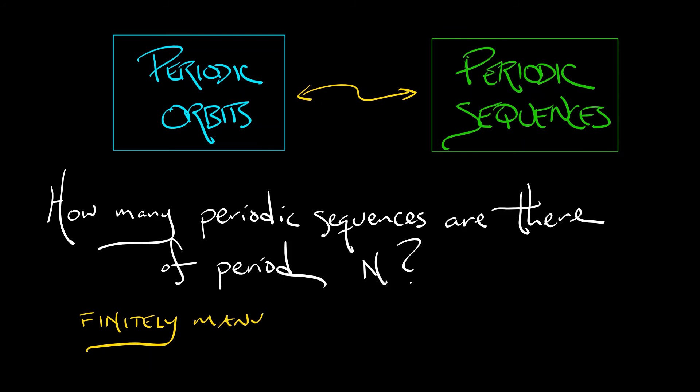Well, clearly there are finitely many for each n. It's the number of words in two letters. Oh wait, but with sub blocks that aren't themselves periodic? Interesting. You might want to think about that, but we definitely have a finite number of periodic orbits of period n for each n. And that number is going to be bigger than one.